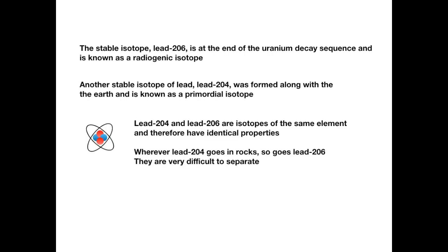The stable isotope lead-206 that we met previously is at the end of that uranium decay sequence, and therefore it's known as a radiogenic isotope. There's another stable isotope of lead. That's lead-204. And that was formed along with the Earth, and that is known as a primordial isotope. So when the Earth was formed, be it four and a half billion years ago or 10,000 years ago, lead-204 was formed at that time, and it's been around ever since. Hence, primordial isotope. But let's remember that lead-204 and lead-206 are isotopes of the same element, and therefore they have identical properties. Wherever lead-204 goes in the rocks, so does lead-206. In fact, they are very difficult to separate. You need specialist laboratory equipment in order to separate those isotopes.